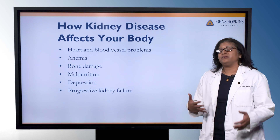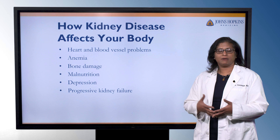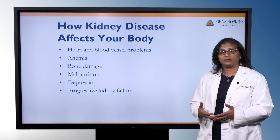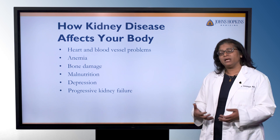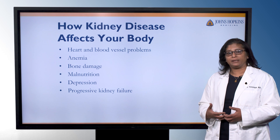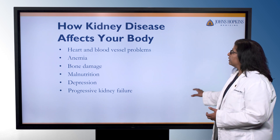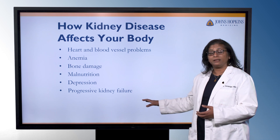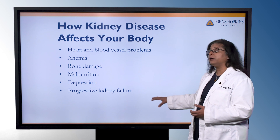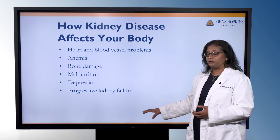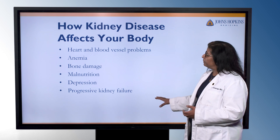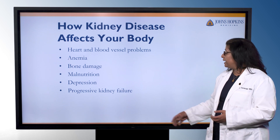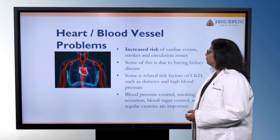Kidney disease can affect how you're filtering the blood, getting rid of waste products, balancing chemicals. But it has a lot more effects throughout the body. It can affect the heart and blood vessels. It can have an impact on anemia or a low blood count. It can result in bone damage. It can be associated with malnutrition and depression and progressive kidney failure.